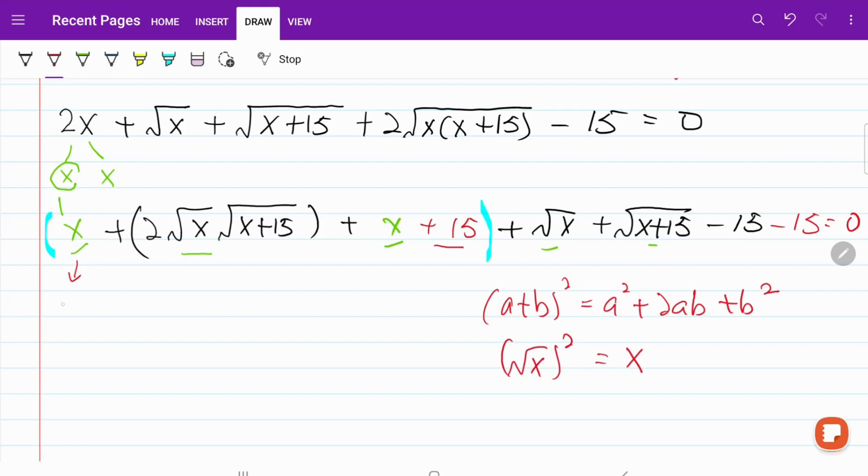I am going to rewrite this as the square root of x squared. And I call this a squared. And now I have a squared plus 2ab plus b squared. And that fits perfectly into what we have written down. Now, if I tidy things up, now it looks like the square root of x plus square root of x plus 15 squared plus square root of x plus 15 minus 30 is equal to 0. And that's what our equation now looks like.